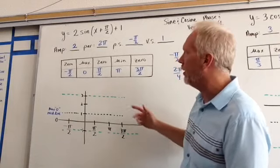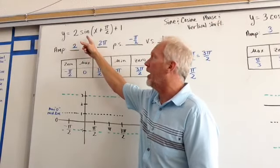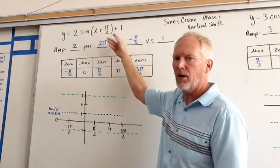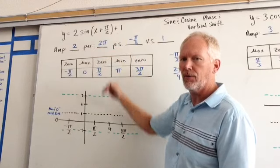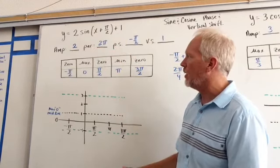Here's example number one. We've got the function y equals 2 sine of x plus pi over 2 plus 1. So this plus 1 out here is a vertical shift going one unit up.